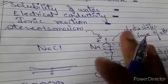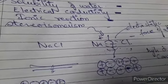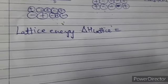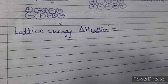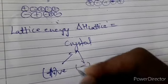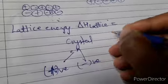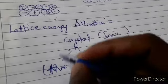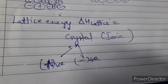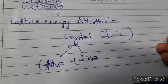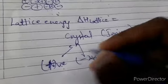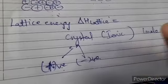Solubility in water also involves two important factors: lattice energy and hydration energy. Lattice energy is associated with the formation of ionic crystals from positive and negative ions. When an ionic crystal forms from its constituent ions, a certain amount of energy — the enthalpy change — is released. This energy released during the formation of one mole of ionic crystal is the lattice energy.